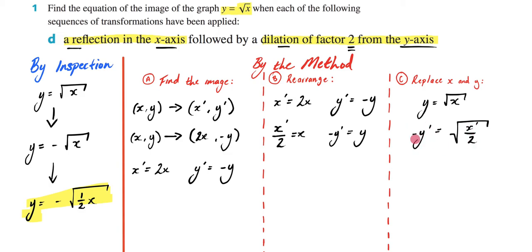Now I'm going to rearrange so I have nothing in front of my y. So it's going to be y equals negative square root of x over 2. And that is going to be your answer.